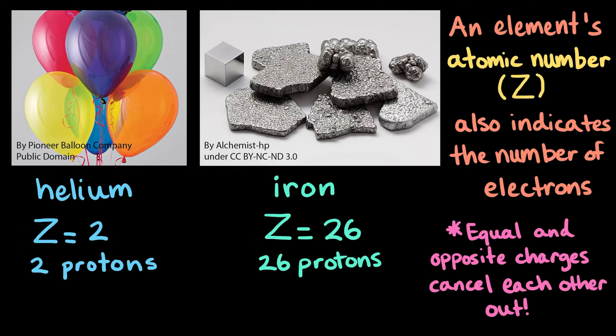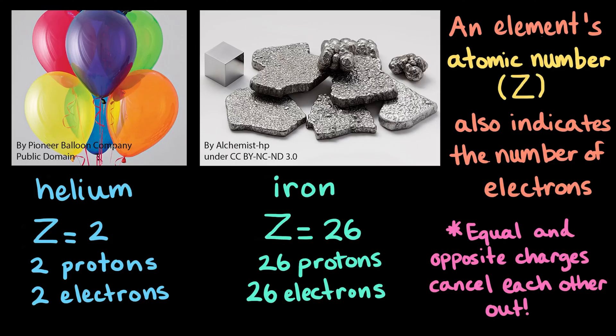Protons have a charge of 1 plus, and electrons have a charge of 1 minus. This means that our helium atom must have two electrons, and our iron atom must have 26 electrons.